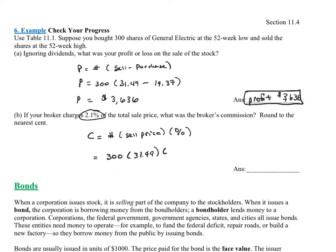And the commission rate is 0.021, which represents 2.1%. Go ahead and throw that into your calculator. I'm getting a total of $198.39.